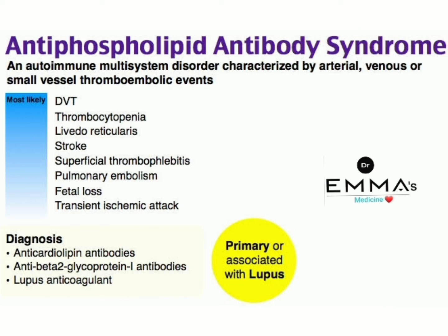The diagnosis of antiphospholipid antibody syndrome is based on: anti-cardiolipin antibodies, anti-beta-2 glycoprotein-1 antibodies, and lupus anticoagulant.